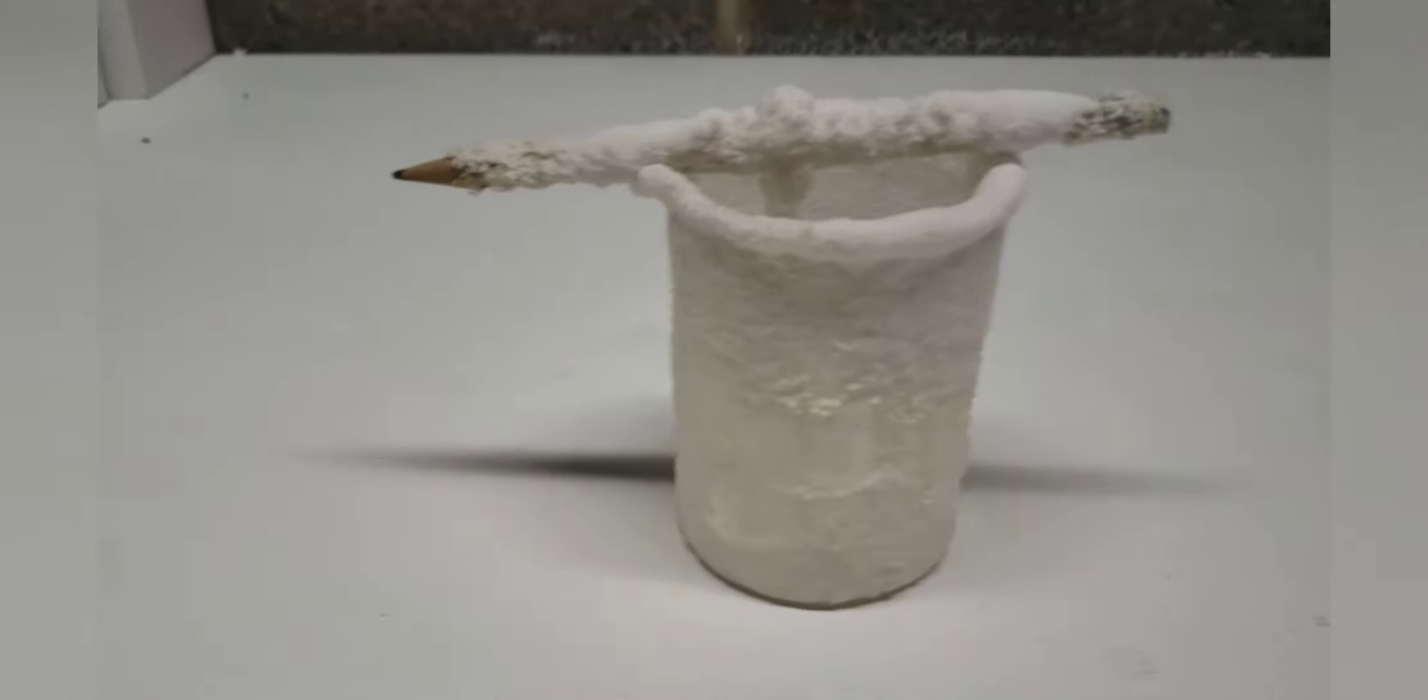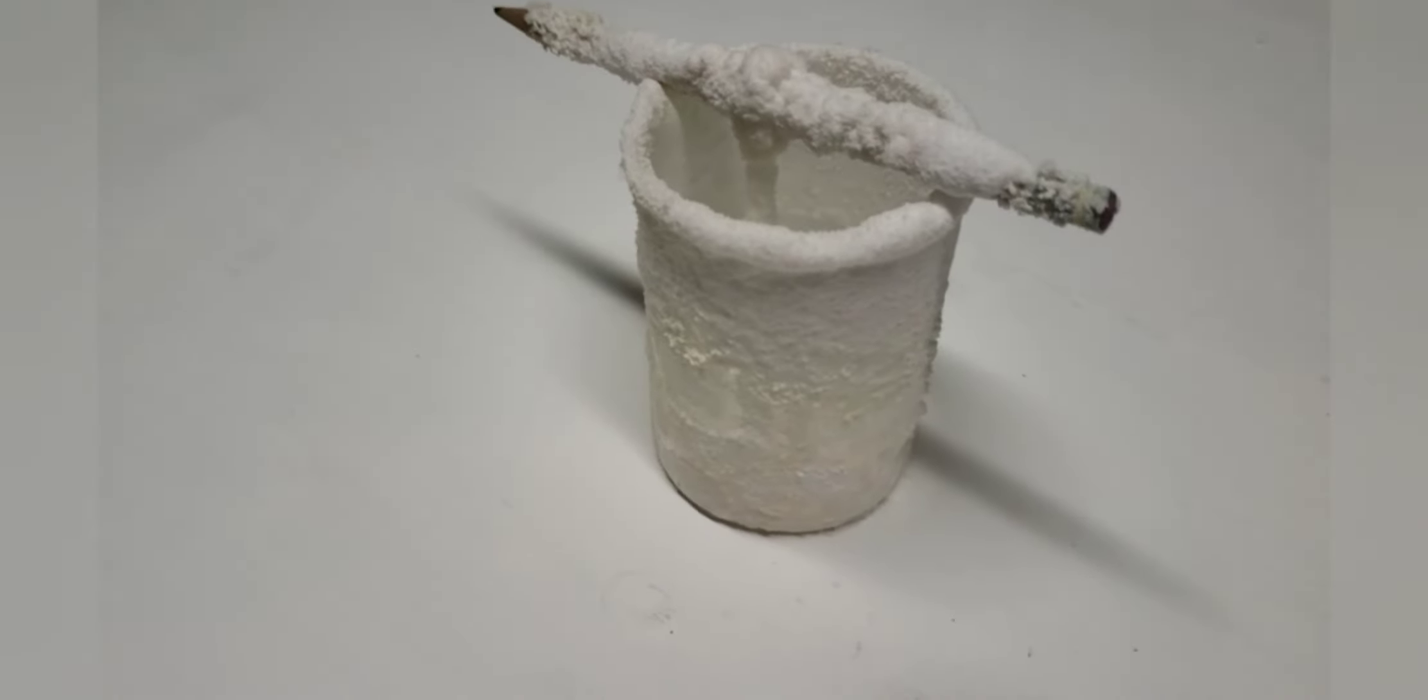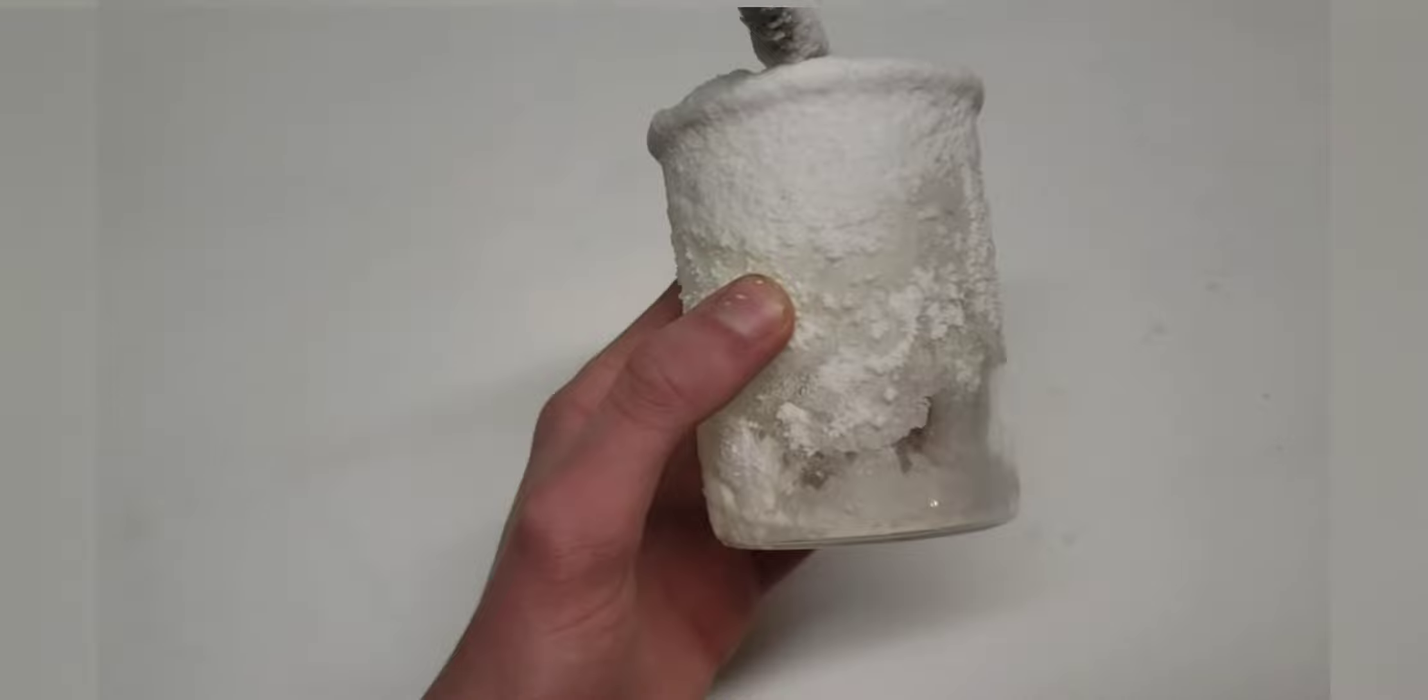It's basically covered the entire outside and inside of the beaker, along with the pencil, the string, the seed crystal, everything basically except the bottom of it.